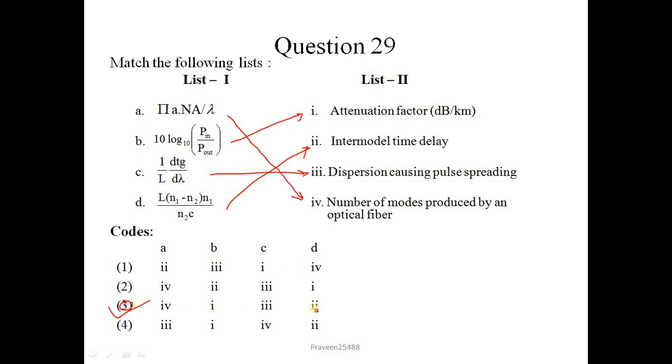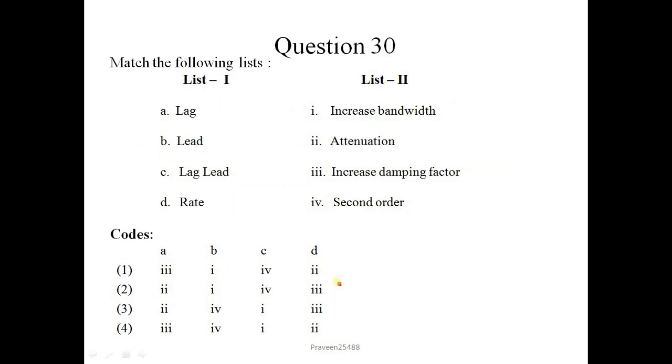Next question is question number 30. Match the following leads, lag, lead lag, lead read. This is for compensators. So lag compensator is for increasing damping factor. Lead compensator increases bandwidth. Lag lead is for second order and attenuation. So correct option is this one.